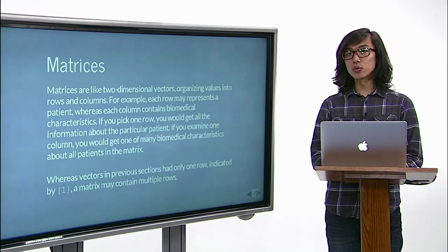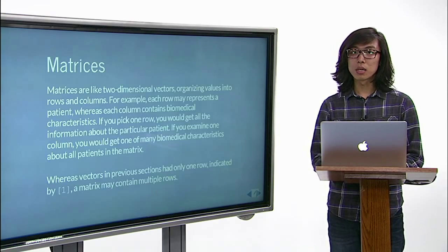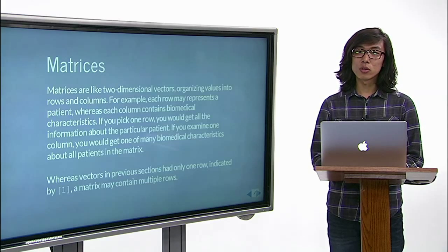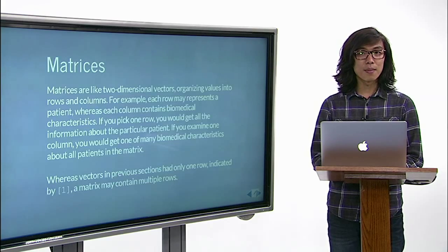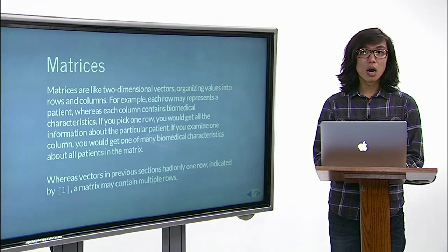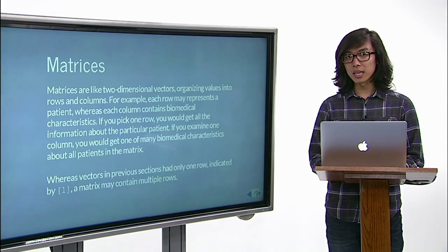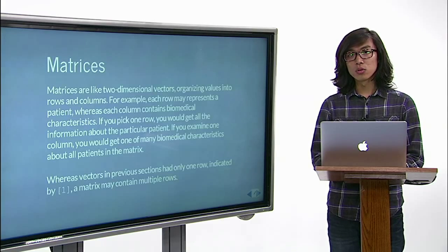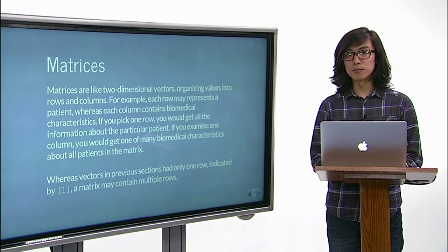Try to row bind ma and mb. Because ma is a 3 by 2 matrix and mb is a 3 by 1 matrix, R returns an error, citing that two matrices do not have the same number of rows.